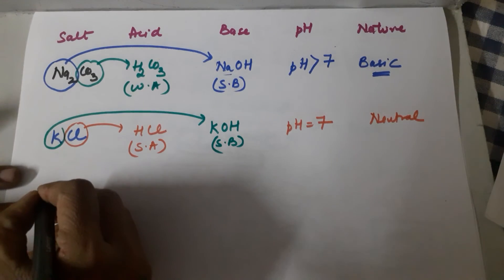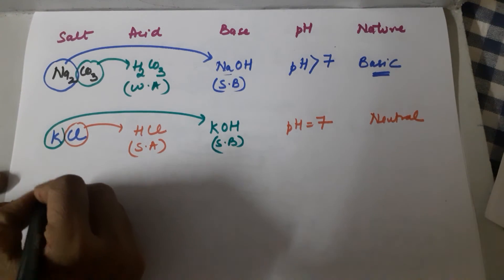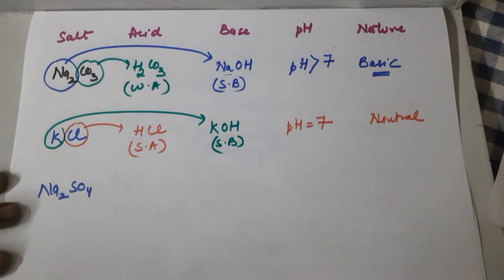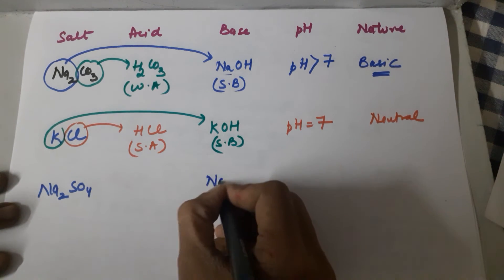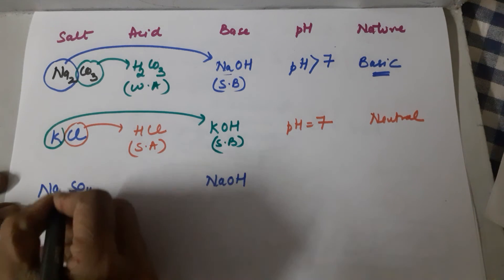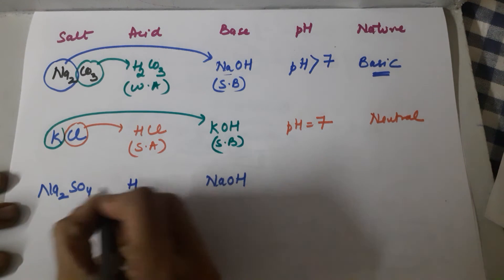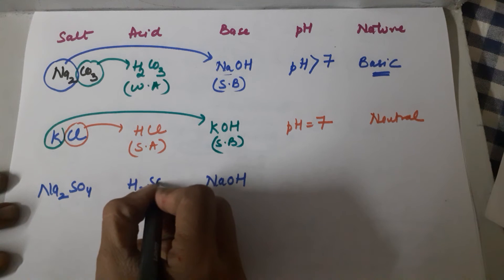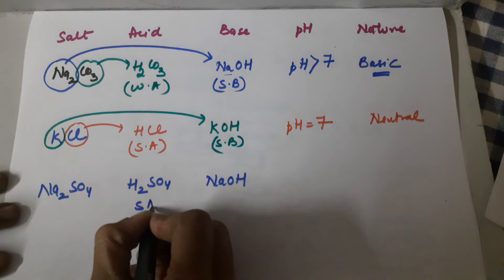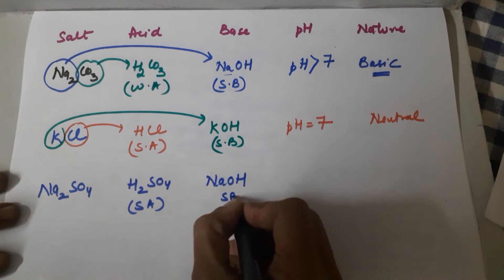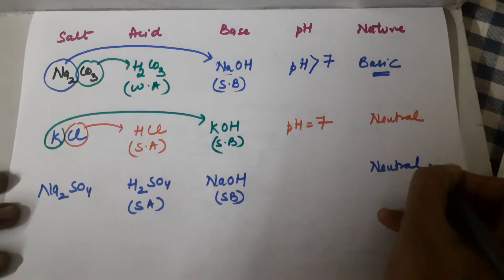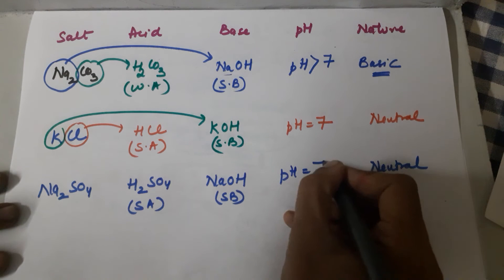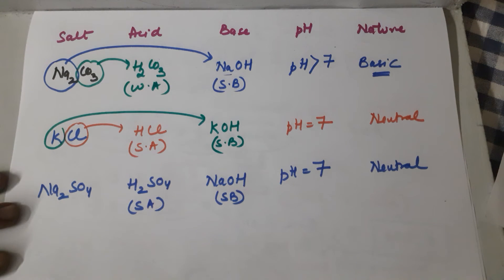Next salt: sodium sulfate, Na₂SO₄. Sodium takes up OH⁻ to become NaOH — a strong base. Sulfate with H⁺ gives H₂SO₄ — a strong acid. Strong acid plus strong base gives a neutral salt, so the pH is 7.